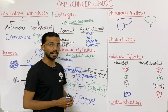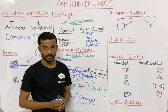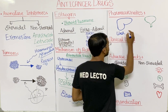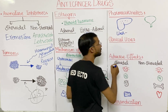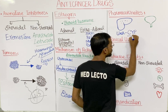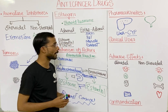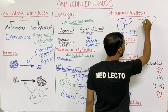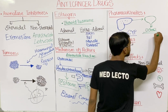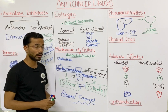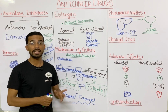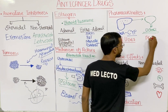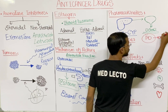Next, let's discuss pharmacokinetics. Aromatase inhibitor drugs are metabolized in the liver through the cytochrome enzyme family. They are excreted from the body through the urine. Also, keep in mind that aromatase inhibitors are mostly taken through the oral route.